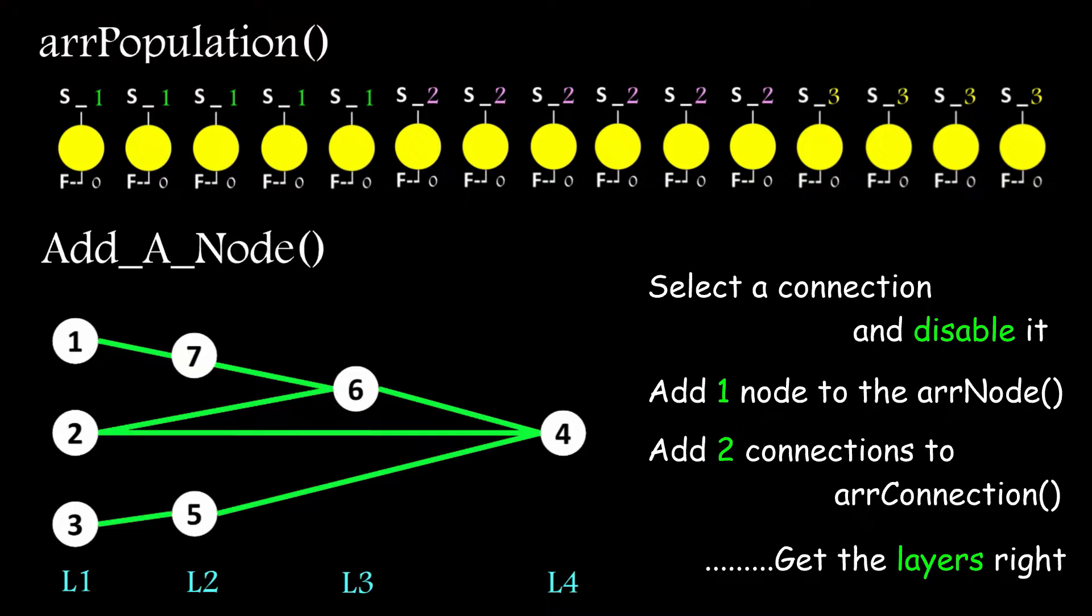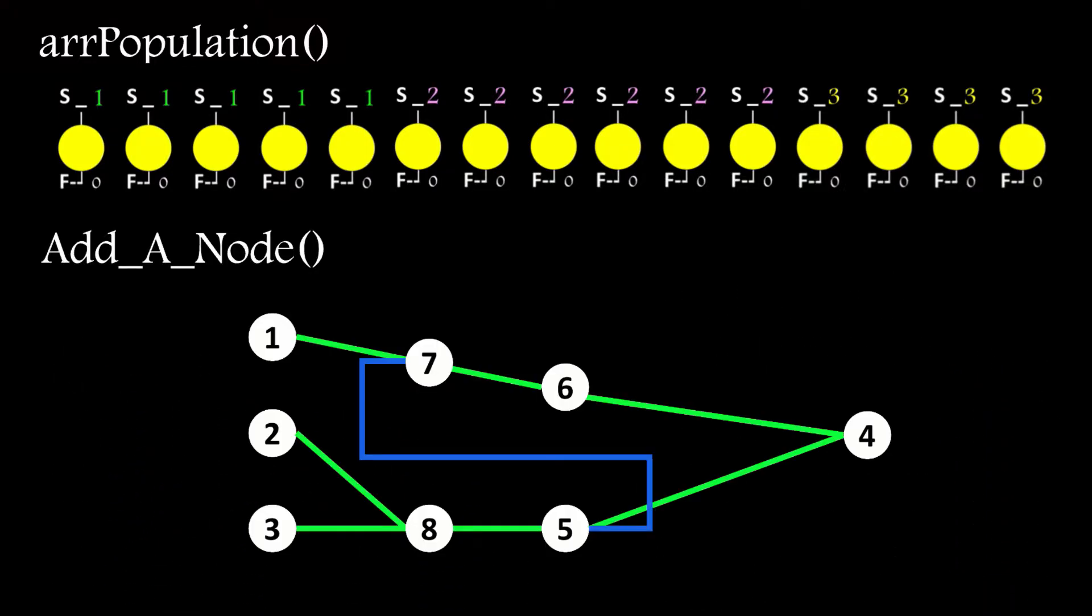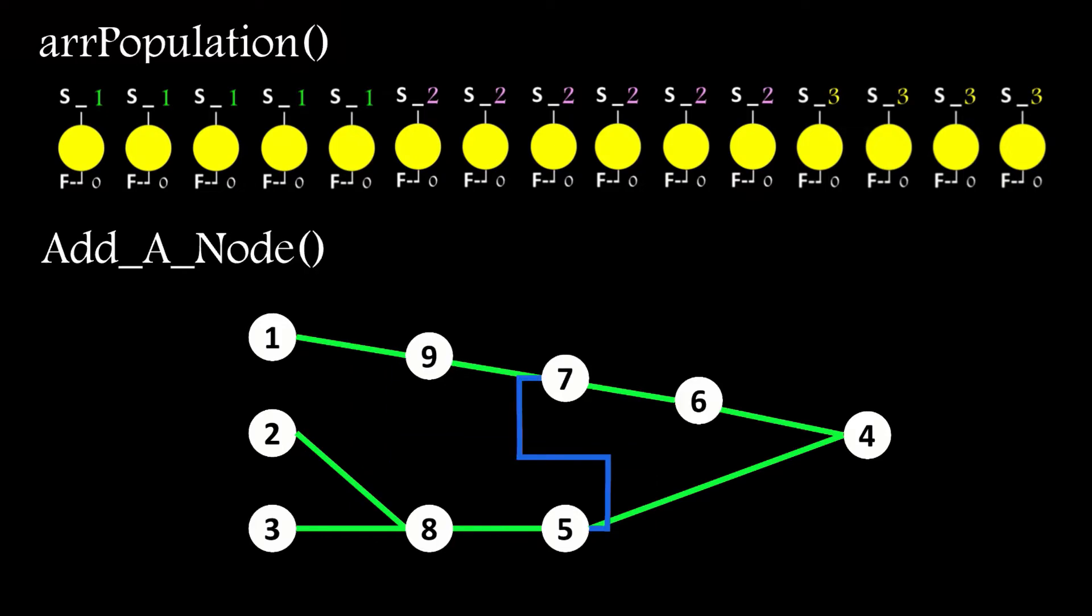If you allow recurrent connections in your network, there's a couple of other checks you need to perform. To take this network as an example, there's a recurrent connection flowing from node 5 back to node 7. If a node is added between nodes 1 and 7, after the layers get adjusted, you'll end up with the following. Having connections between nodes on the same layer is simply not allowed, so this now needs to be disabled, represented here by a dashed line.